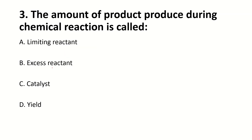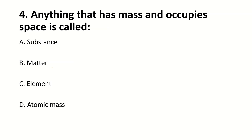The amount of product produced during a chemical reaction is called dash. The right answer is D: Yield. Anything that has mass and occupies space is called dash. The right answer is B: Matter.